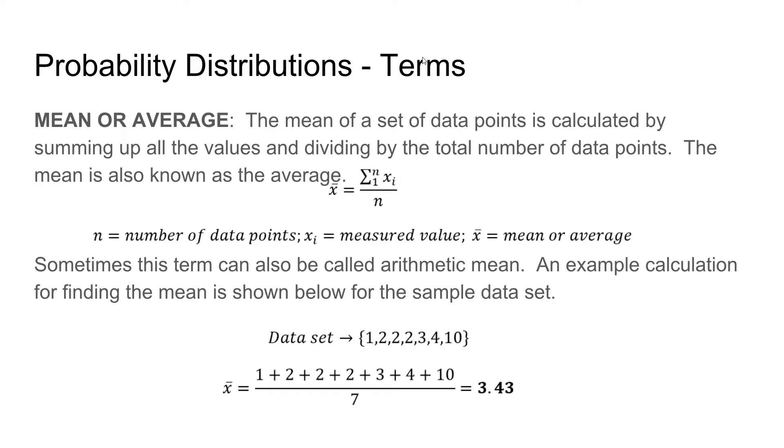The first term you need to understand is mean or average. The mean of a set of data points is calculated by summing up all the values and dividing by the total number of data points. The mean is also known as the average, and the equation is shown here. Sometimes this term can also be called the arithmetic mean, and an example calculation is shown below.